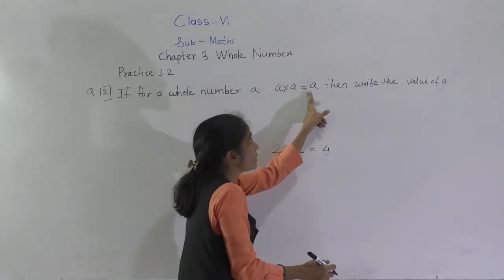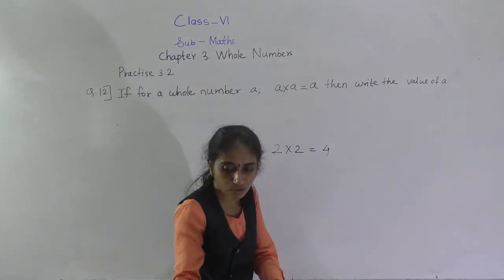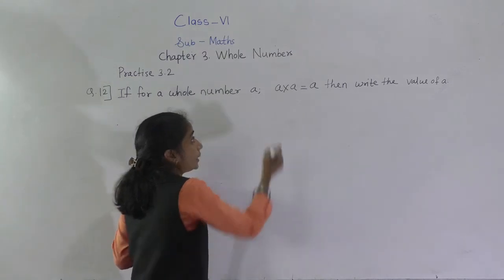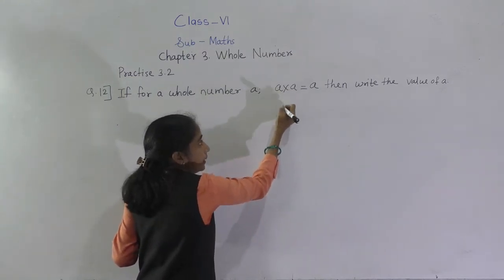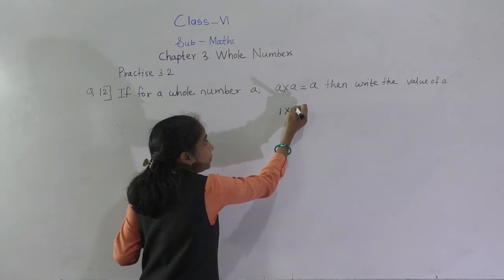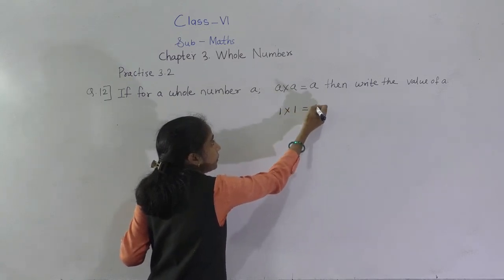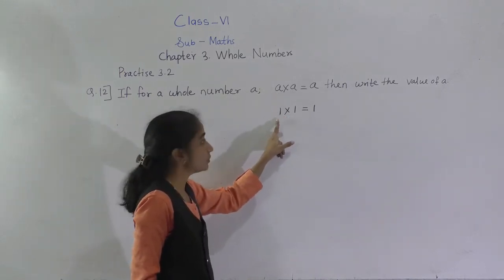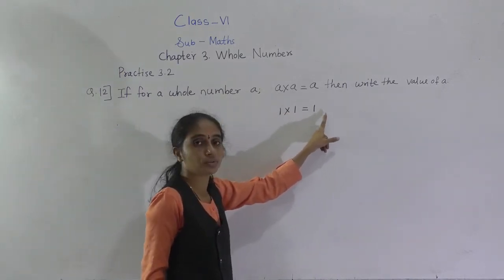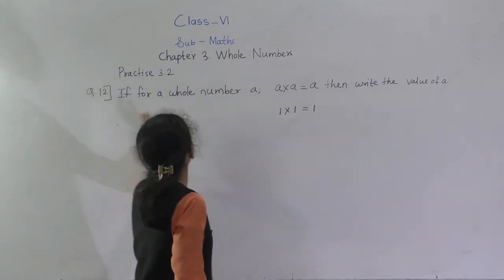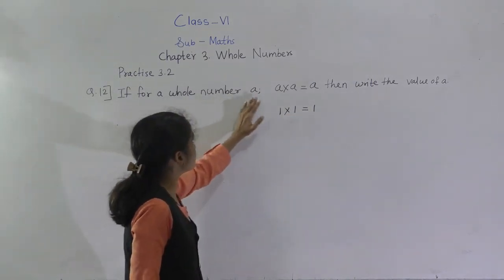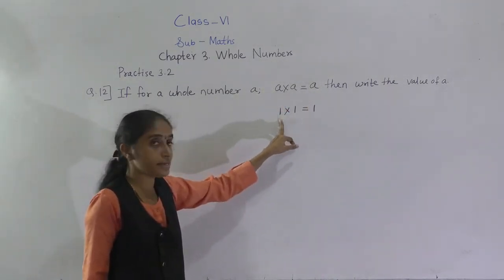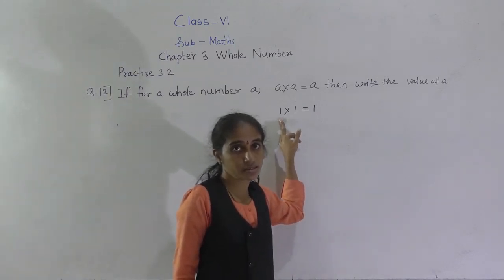Which number satisfies A into A equals A? If you take A as 1: 1 into 1 is equal to 1. That equals A itself. So if A into A is equal to A, then the value of A is 1.